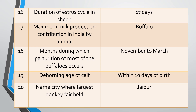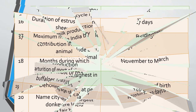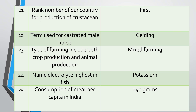Question twenty: Name the city where the largest donkey fair is held. Answer: Jaipur city. Question twenty-one: What is the rank of India in the production of crustacean? Answer: India ranks number one in crustacean production.